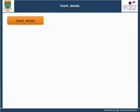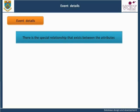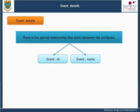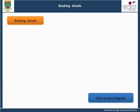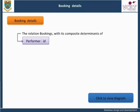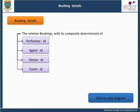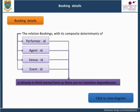Event Details in 3NF: The events relation is already in third normal form, as there are no transitive dependencies. There is a special relationship that exists between the attributes event ID and event name, which does not present a problem within the events relation itself but creates difficulties in the bookings relation because of the overlapping key which results. Booking Details in 3NF: The relation bookings, with its composite determinants of performer ID, agent ID, venue ID, and event ID, or performer ID, agent ID, venue ID, and event name, is already in third normal form as there are no transitive dependencies.